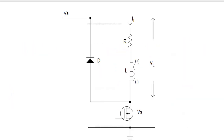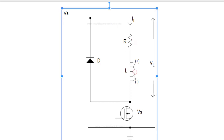This is a part of the power electronic circuit. You are seeing one resistor and an RL load in series with one power electronic switch — that switch is a MOSFET. The diode is connected across the load. This diode is called a freewheeling diode. We will see later why it's called a freewheeling diode. So how it works — that's what we are mainly going to see here.